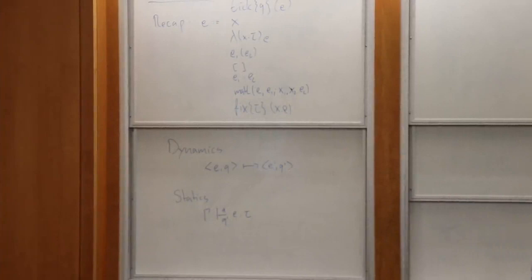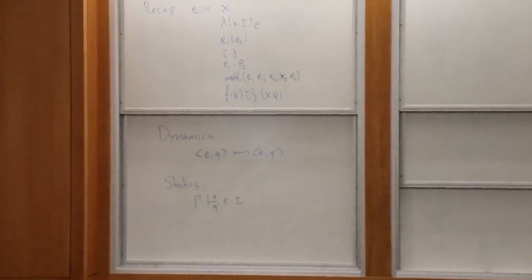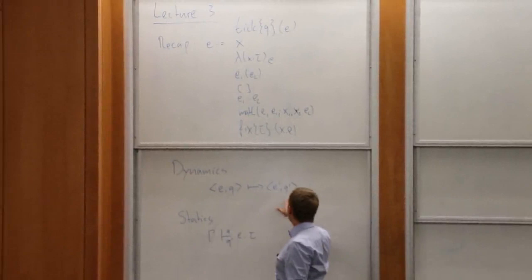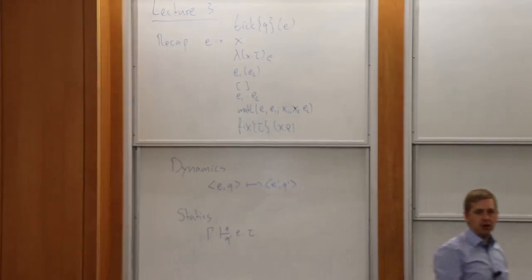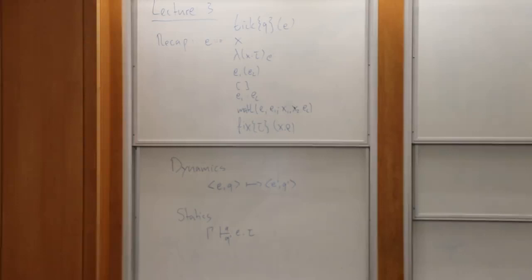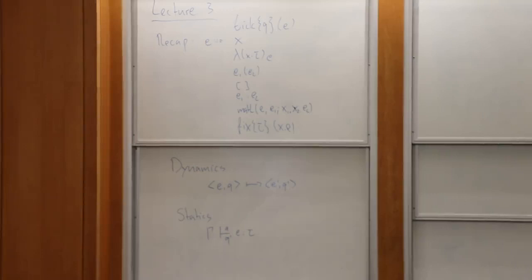We defined yet another dynamics. We had this tick construct, and tick would increment or decrement this resource counter in the dynamics — so there's another way to get stuck by running out of resources. Then we started to define this type system for resource analysis, where we have potentials stored in lists, and also constant potentials Q and Q prime.